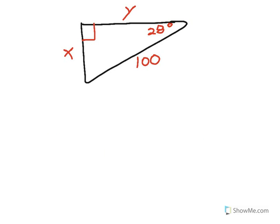As an example, let's say that I want to find the side lengths X and Y to the nearest integer. If I know the angle measure, I know the hypotenuse of 100 and I know the angle measure of 28 degrees. Given an angle measure and a hypotenuse, I can find X and Y using the sine and cosine functions.